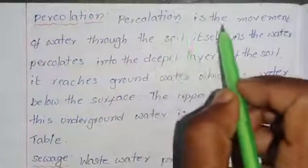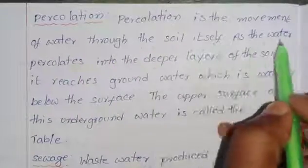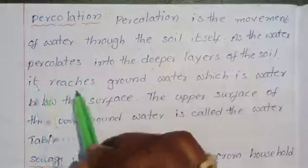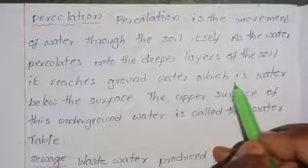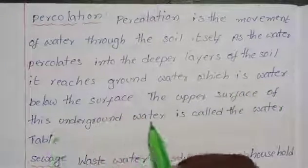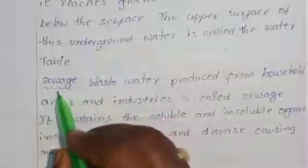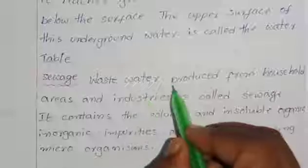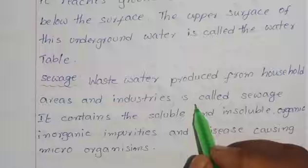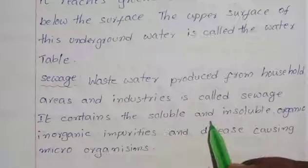3) Percolation: Percolation is the movement of water through the soil itself. As the water percolates into the deeper layers of the soil, it reaches groundwater, which is water below the surface. The upper surface of this underground water is called the water table.